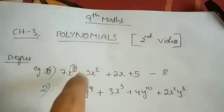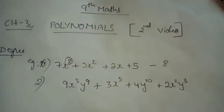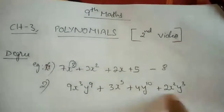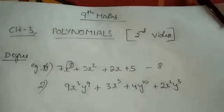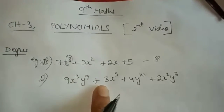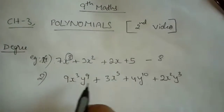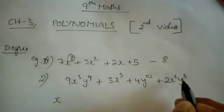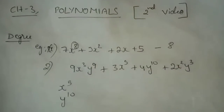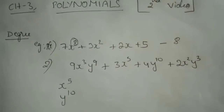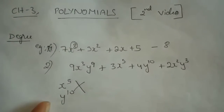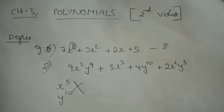Here in this polynomial in two variables, how will you find the degree? You may say X's highest power is 5 and Y's highest power is 10. But this is a wrong estimation. This is not the right way of saying the degree.